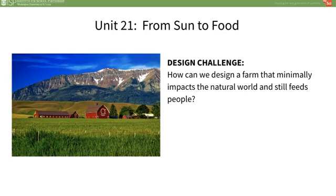Tell students: by the end of our unit, we are going to answer the question, how can we design a farm that minimally impacts the natural world and still feeds people? What do you think we need to know in order to meet this design challenge? What questions do you have about this design challenge? Ask students to turn and talk to a partner, then share out some answers to the whole class. You may want to write some of their ideas and questions on a piece of chart paper to revisit throughout the unit.